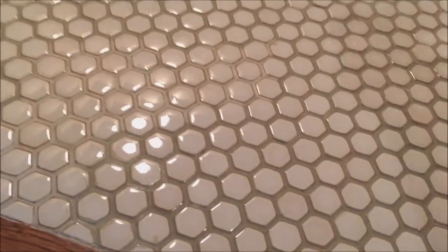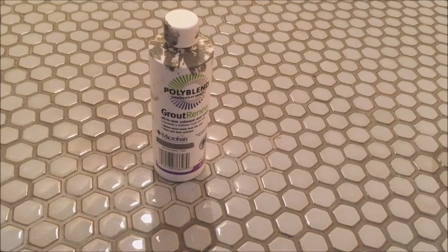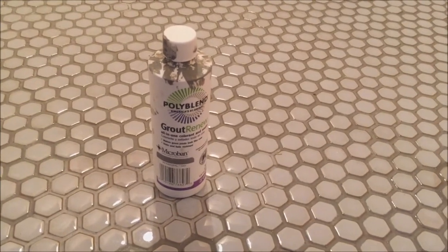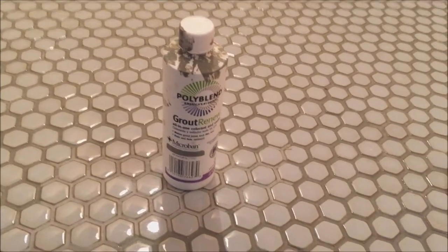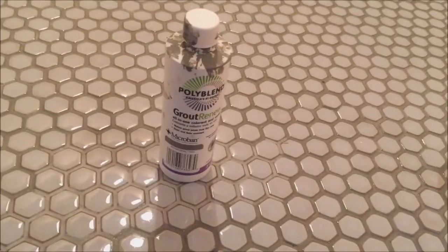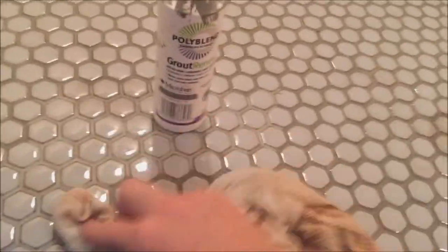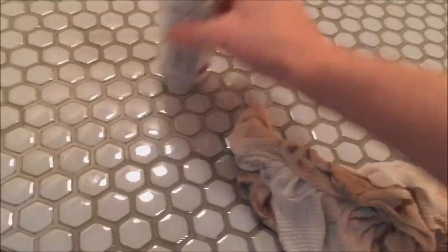What I used to paint it was this Polyblend Grout Renewal. I got it at Home Depot. This color is Natural Gray. When I tile my shower I will just go ahead and buy the Polyblend grout in Natural Gray so I won't have to paint it, because that would be silly.